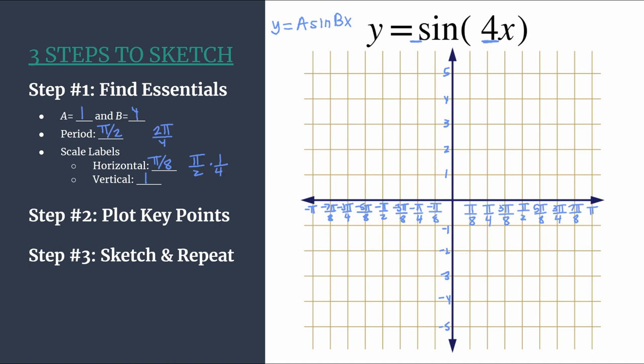Step two is to plot our key points. Now we know for sine our key points are in the pattern: zero, maximum, zero, minimum, zero, as long as we're dealing with an unreflected sine graph, which we are. We see we did not have a negative out in front of our sine function. So that'll be our pattern, and we can go ahead and start since this is an unshifted sine graph. We start by putting our zero, or our first x-intercept, on the origin.